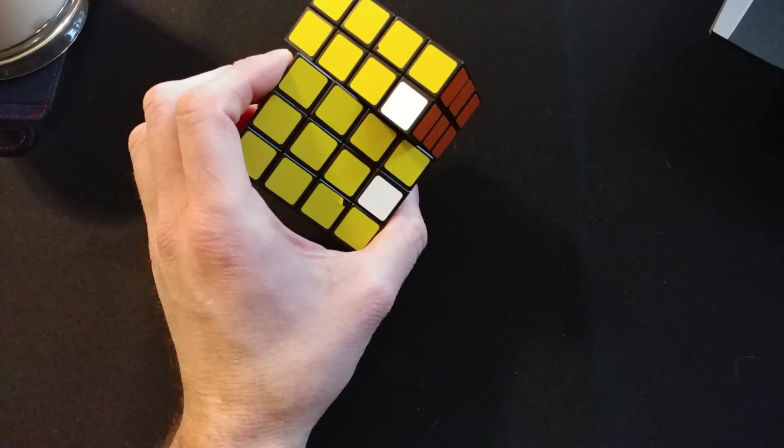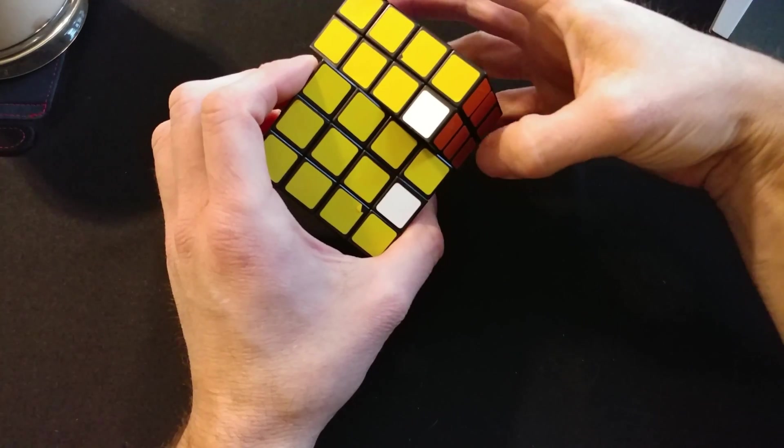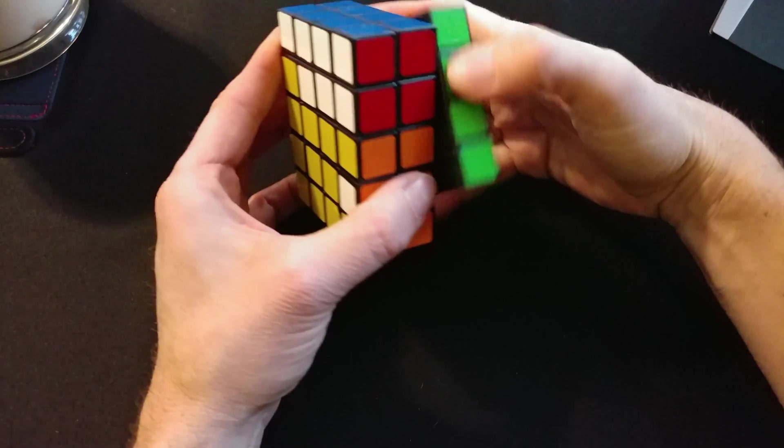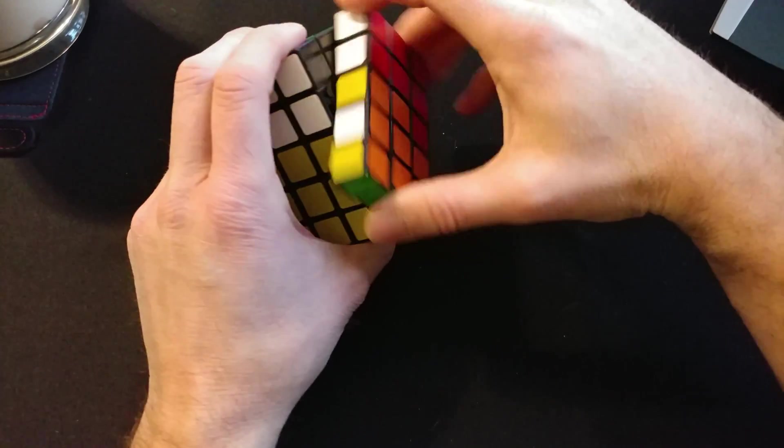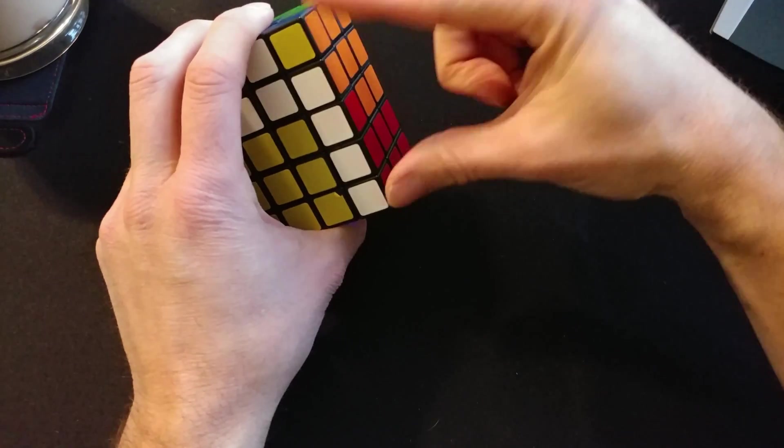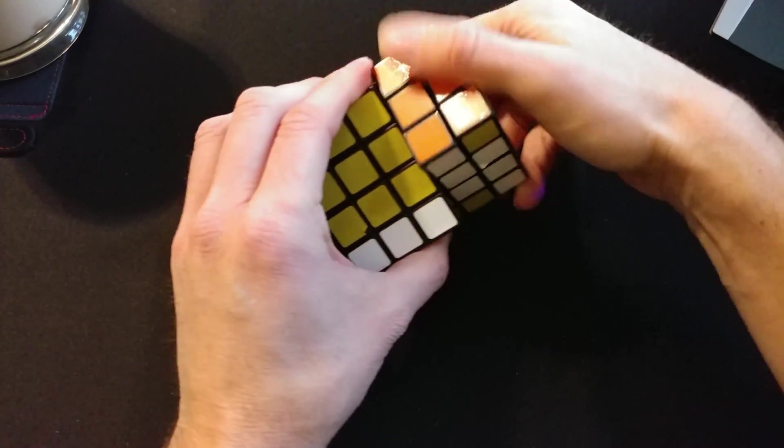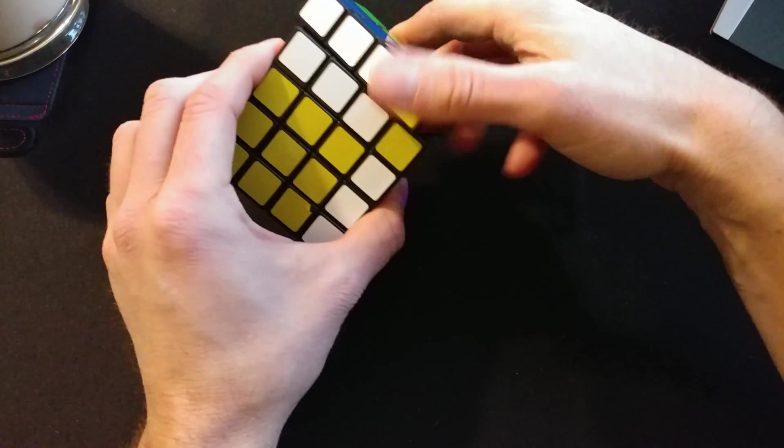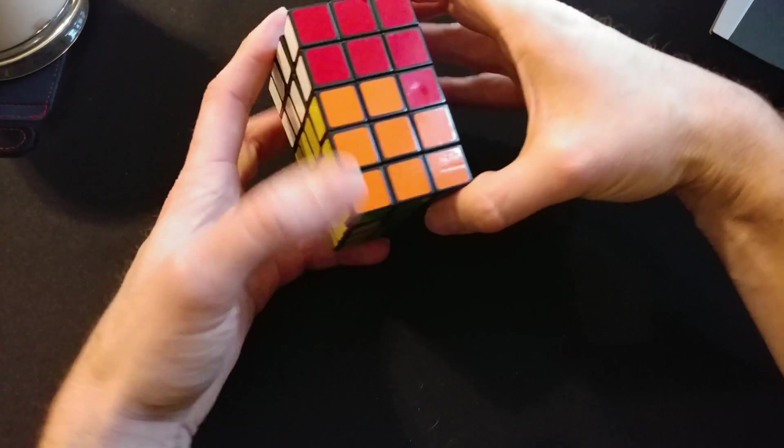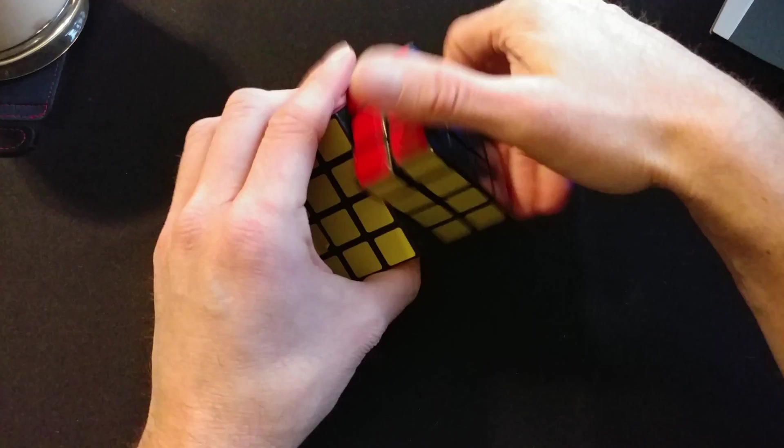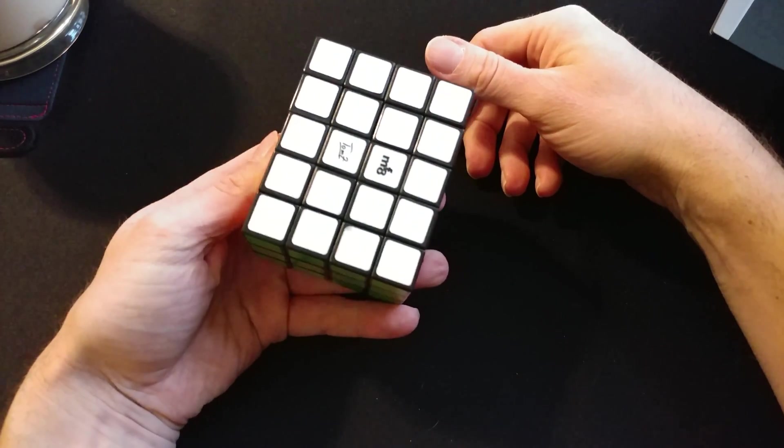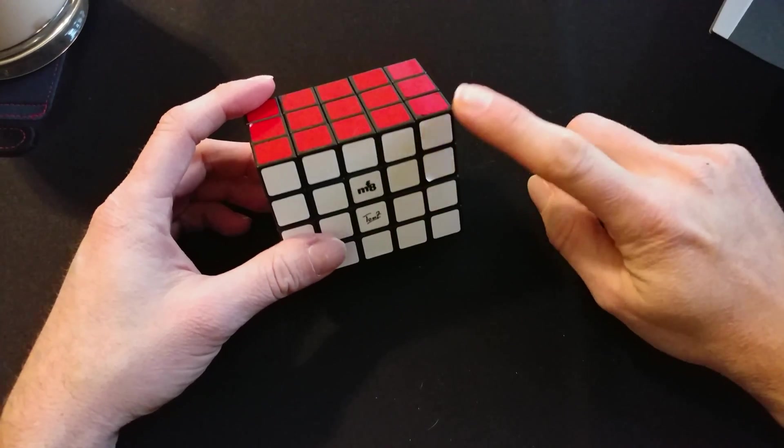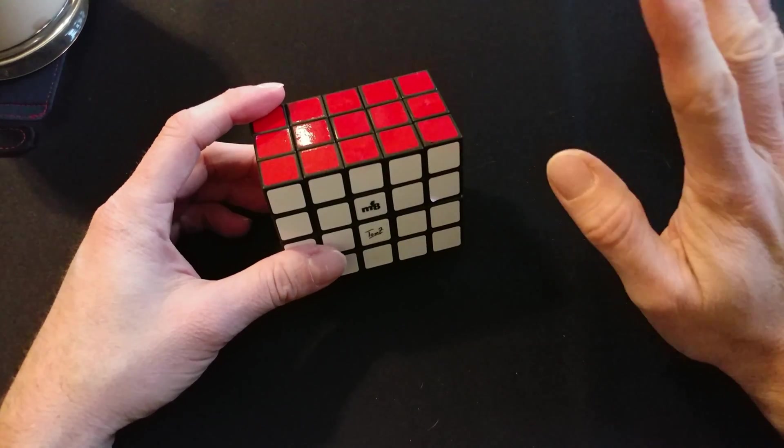That's where we initiate the algorithm from. So we're gonna go up two, R2, F2. Okay, so we're just doing the single layer. Up two, and remember we have two layers, so we have to go one, two. F2, R2, up two, and that solves the cube.